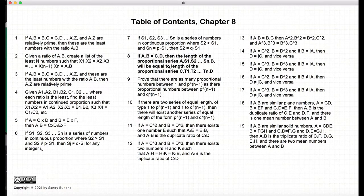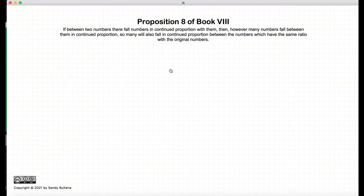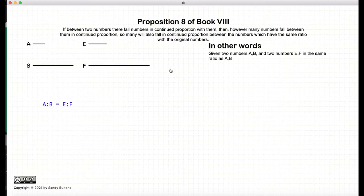We're going to be doing proposition 8. Proposition 8 is basically saying if we have two numbers, a and b, that their ratio are equal to two other numbers, e and f,